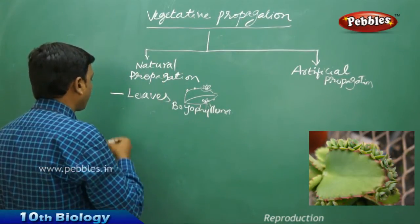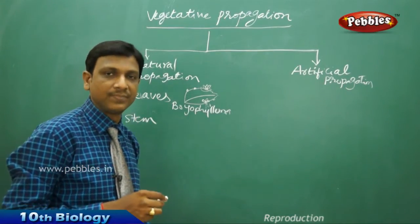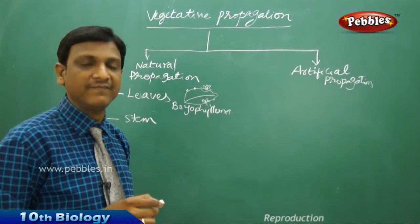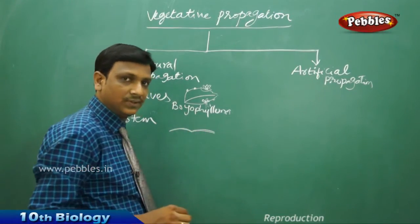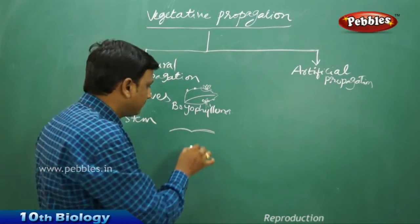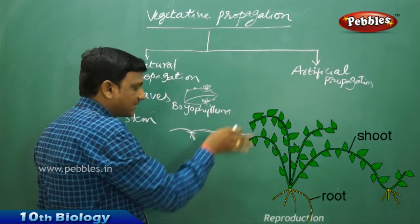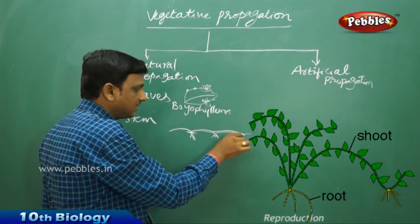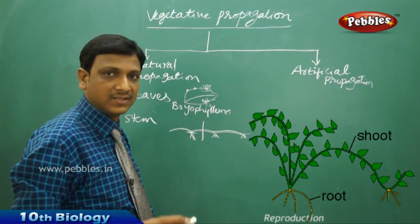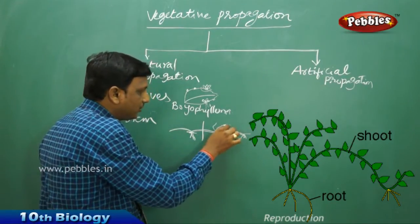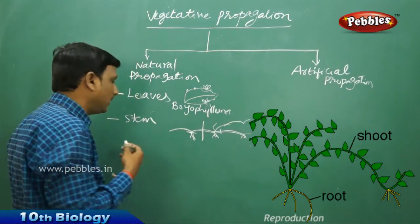Now let us look at vegetative propagation through stem. Certain plants like stolons and runners have a very weak stem and they run on the ground. If the node of their stem comes in contact with the soil, it produces roots. Wherever the runner touches the soil, it produces roots. If the plant is cut accidentally or naturally, that part can individually grow into a new plant and produce another runner, and in such a way it will propagate.